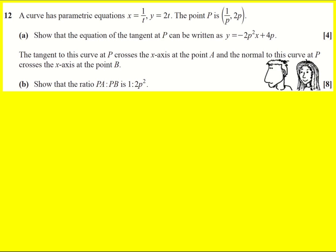We have a pair of parametric equations and they don't actually look that tricky. The thing that makes this question trickier than the average parametric equations question is that we're going to work with a quite general coordinate — it's going to be when t is equal to p. So our coordinate is in terms of the parameter, and we're going to write down the tangent in terms of this parameter as well. We're asked to find the equation of the tangent at p.